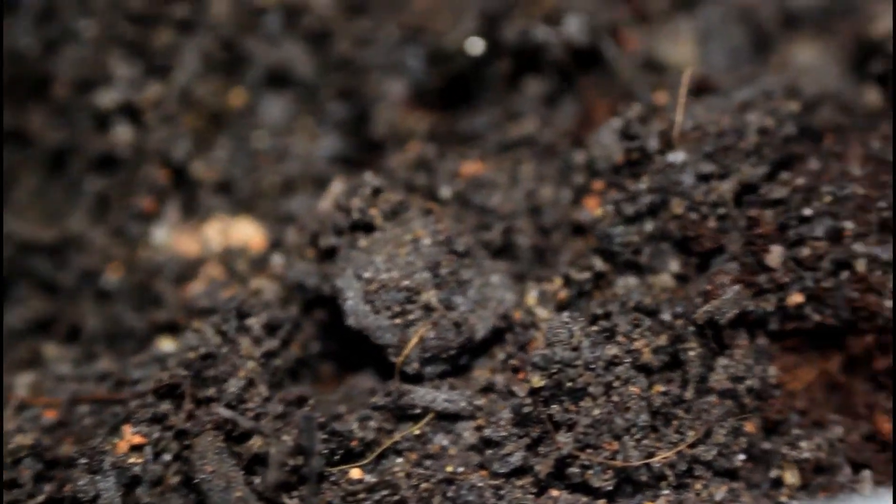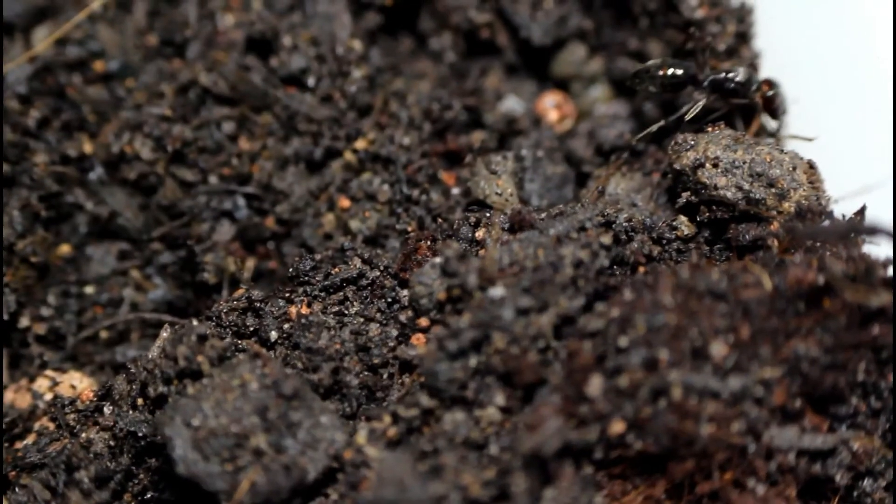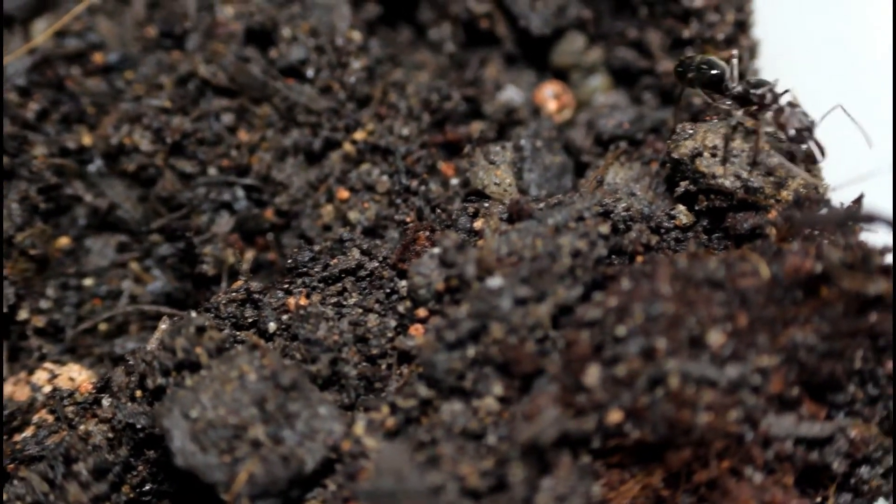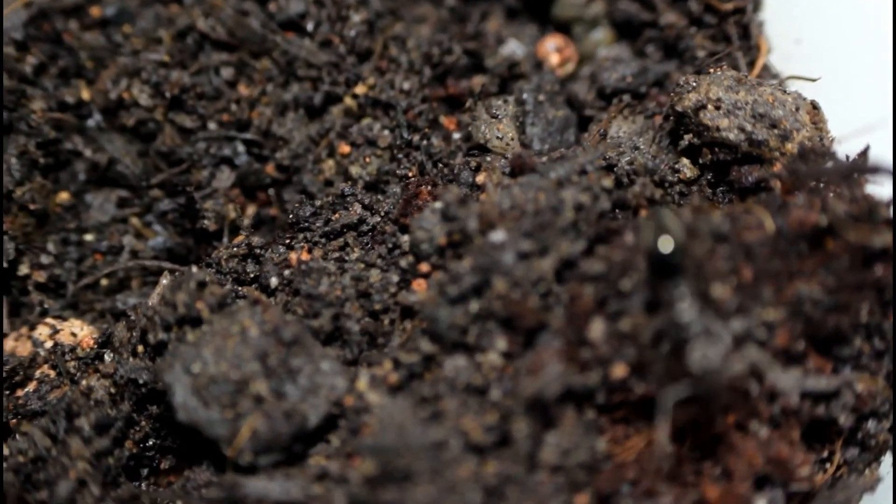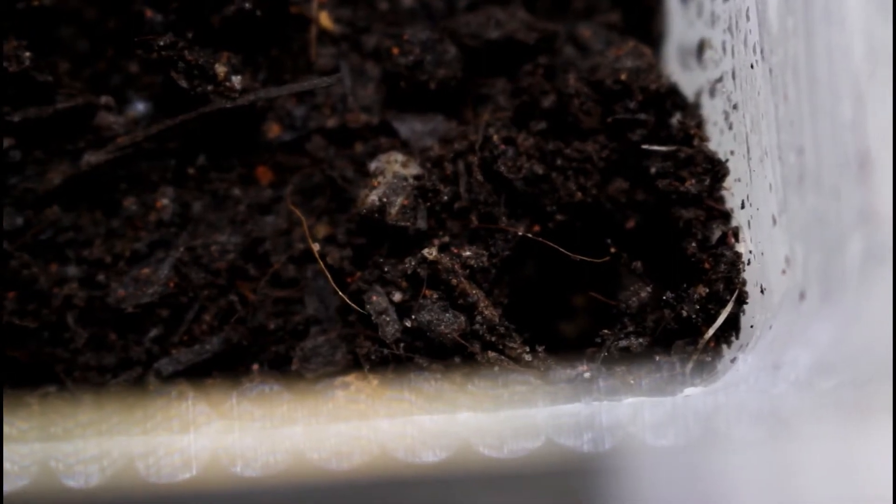If you have a semi-claustral queen like this trap-jaw queen I have here, I would recommend providing them with a soil setup. Semi-claustral queens will need a diet during their first founding stage. So you just have to feed them like you normally do to your colonies.